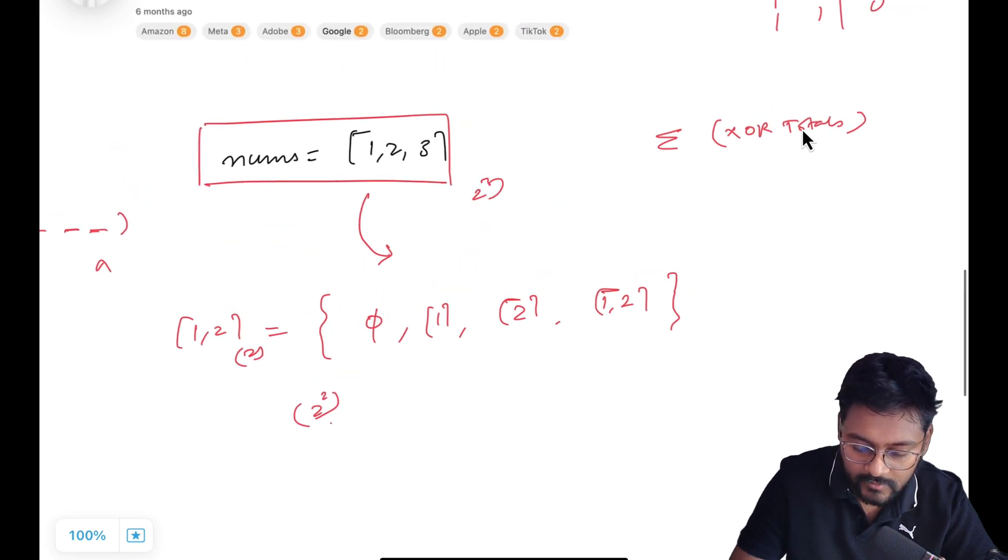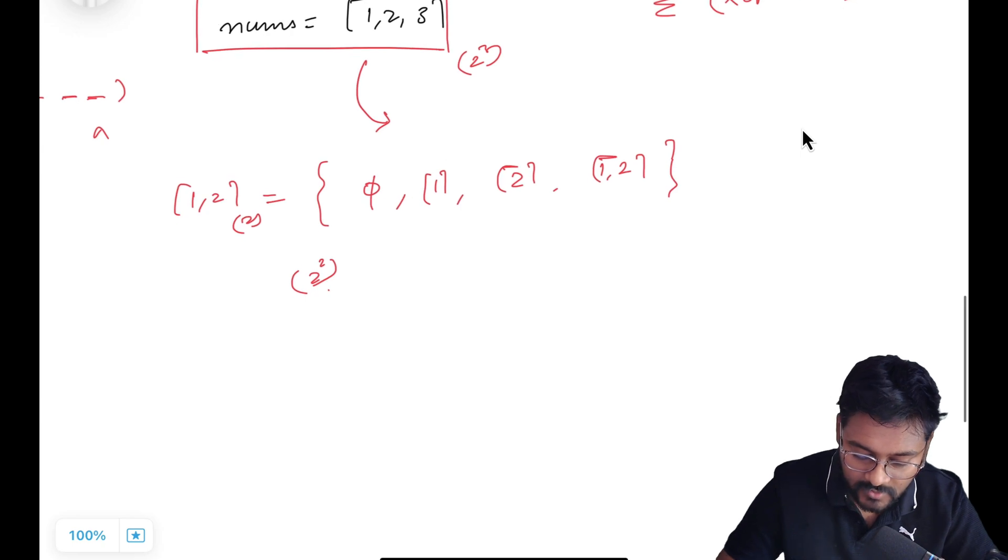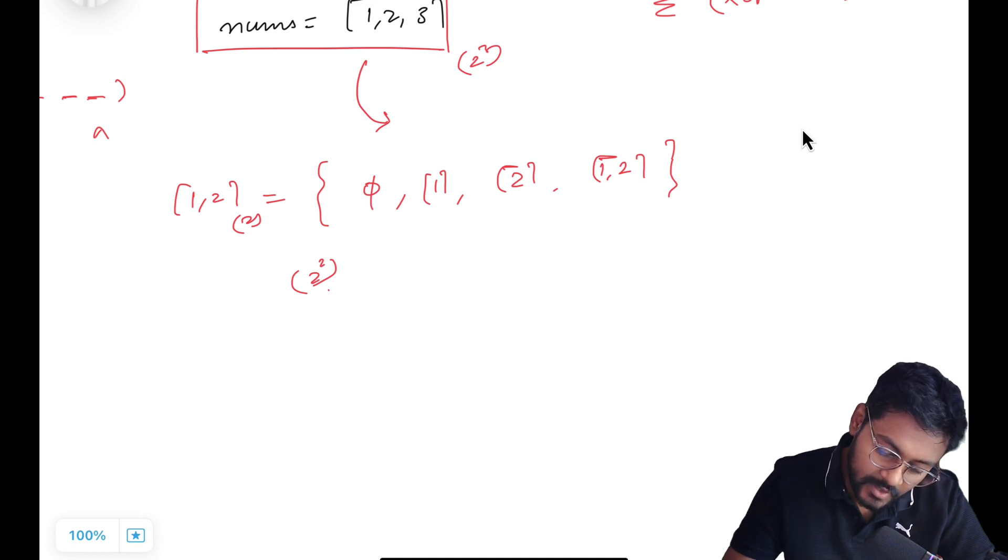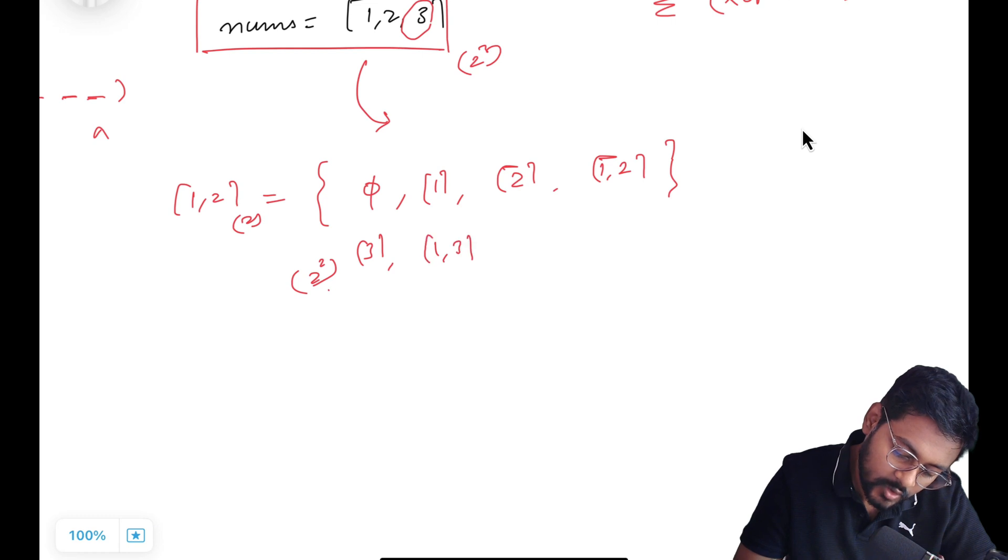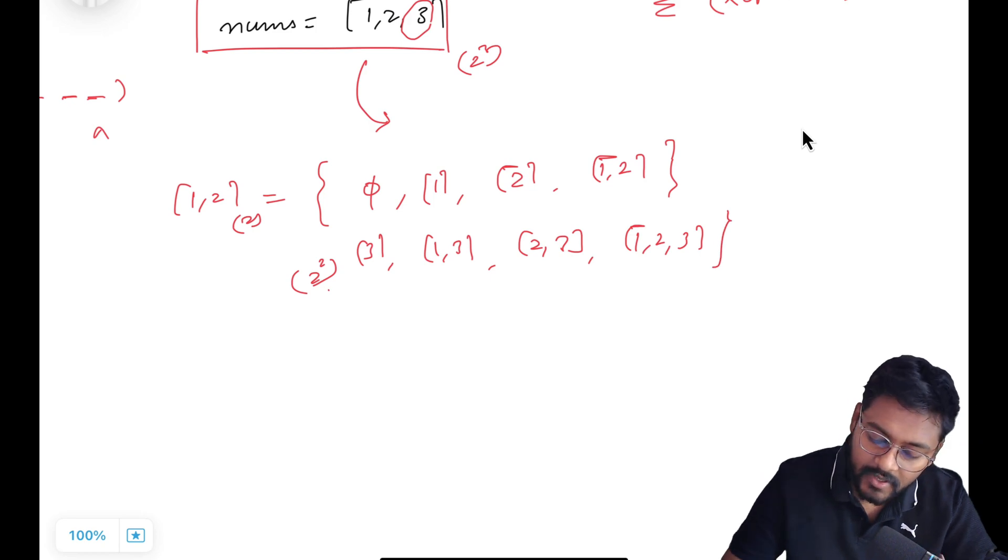So for two elements we are having 2 to the power 2 subsets. For three elements we will be having 2 to the power 3 subsets. First of all these four elements will also be the subset, then I am introducing 3. So these four just include 3 into that as well. So this will be 3, this will be 1,3, then 2,3, then 1,2,3.